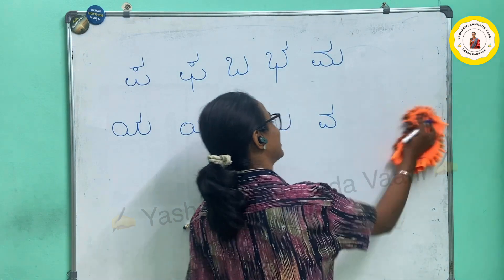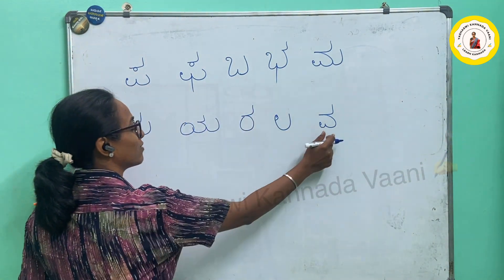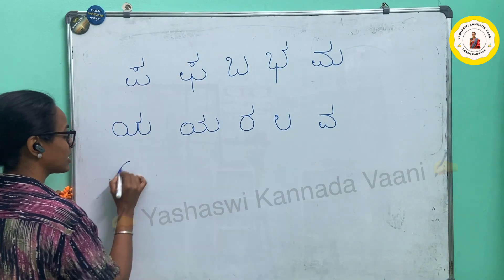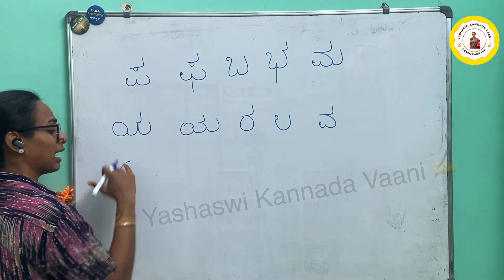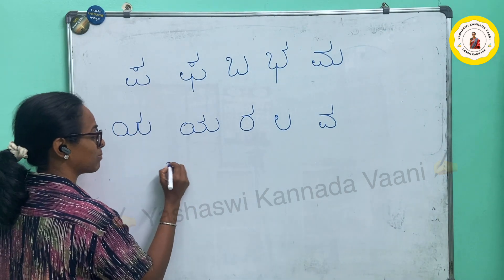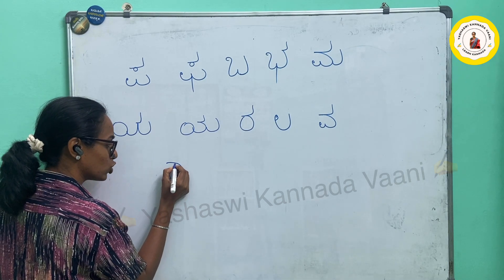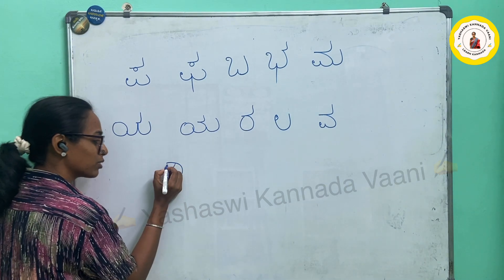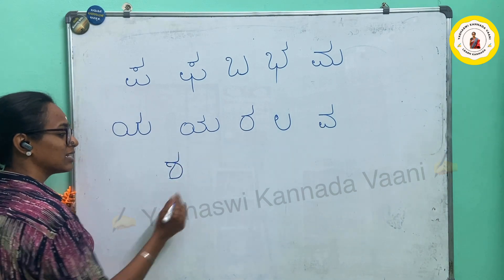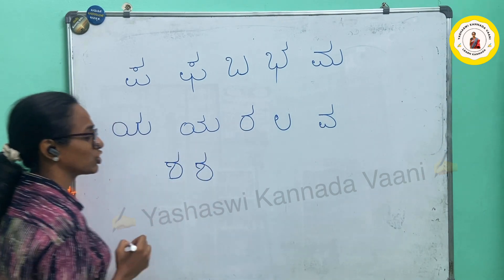YA, RA, LA, VA — next is SHA. For SHA, we have a C shape. Invert this one — the mirror shape of this — it will become like this. Now from the bottom, join here. Put a circle here, then put a TALYA. This is how I write letter SHA.